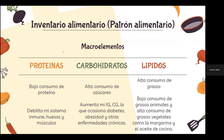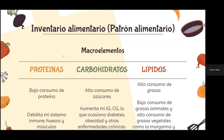Uno de los primeros resultados fue un inventario alimentario donde nos dimos cuenta que la malnutrición en los hogares se puede dividir en macro y microelementos. Los macroelementos son las proteínas, carbohidratos y lípidos, que construyen los huesos y toda la parte de la salud del cuerpo para poder ejercer un esfuerzo físico sin debilitarse. El bajo consumo de proteínas debilita el sistema inmune, los huesos y los músculos, lo que puede provocar anemia.